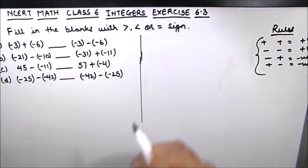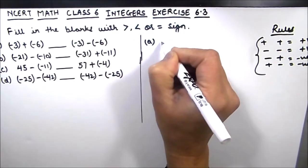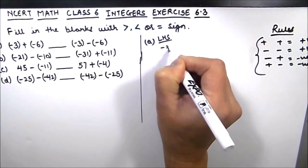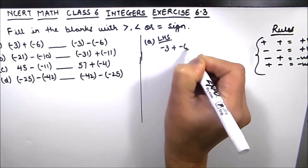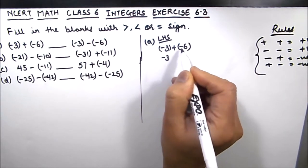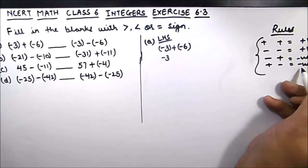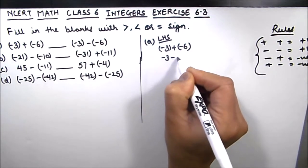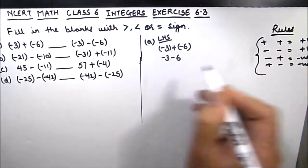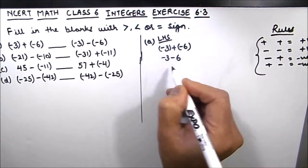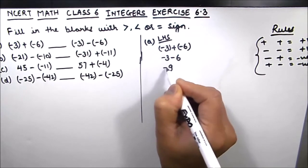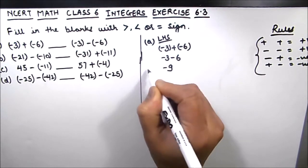Now let's start with part A. The left hand side is (-3) + (-6). We write -3 as is, then plus and minus gives us minus, so this becomes -3 - 6. Now we have two same signs: minus and minus, so minus minus will be positive. 6 plus 3 is 9. As both numbers are negative, the sign is negative, so we have -9 on the left hand side.